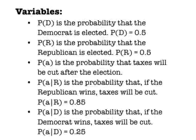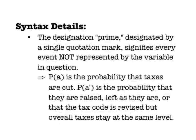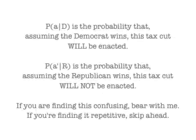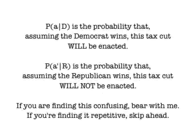You can use this information to find out the total probability that taxes will be cut, regardless of who's elected. We will call the probability that taxes will be cut P(A), and the probability that they will not be cut P(A'). The notation shown on the screen here means 'probability of A given D' — in other words, the chance that the Democrat, if elected, cuts taxes. Similarly, P(A' given R) is the chance that the Republican doesn't cut taxes if elected.